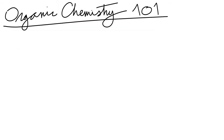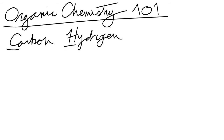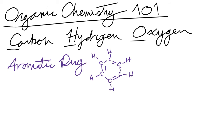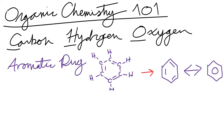In order to understand what lignin is chemically, we should review some basic organic chemistry. Three of the most common elements of organic chemistry are carbon, denoted by the letter C, hydrogen, denoted by an H, and oxygen, denoted by an O. An important structure, particularly for lignin, is the aromatic ring, which is comprised of six carbons double bonded to each other to form a ring. The structure can be drawn as a hexagon with lines or as a hexagon with a circle, but for this video I will draw just plain hexagons to represent the aromatics in lignin.